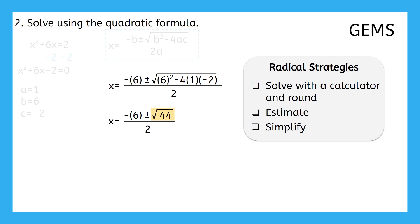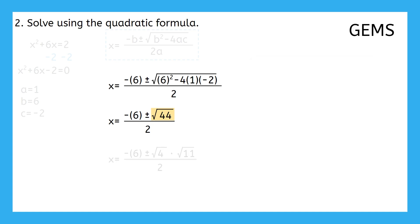Since we want to be precise, that rules out rounding and estimating, which leaves us with simplifying. The square root of 44 can be rewritten as the square root of 4 times the square root of 11, which simplifies to plus or minus 2 times the square root of 11.